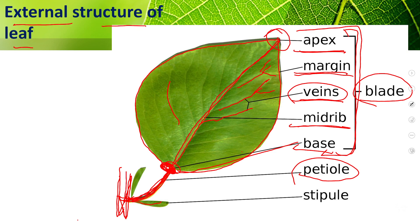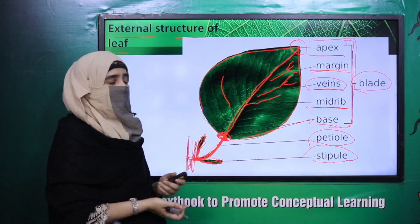The petiole is the stalk. Now we have little extensions that are stipules, so this is the external structure of the leaf.